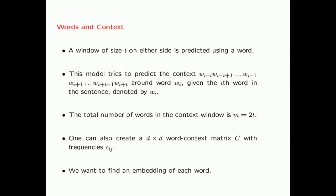One can create a d cross d word context matrix C with frequency Cij. We want to find an embedding of each word. Note that the moment we see we have a word context matrix C, it naturally makes us think of matrix factorization. And as we will see later, Word2Vec is a form of weighted matrix factorization of this matrix.